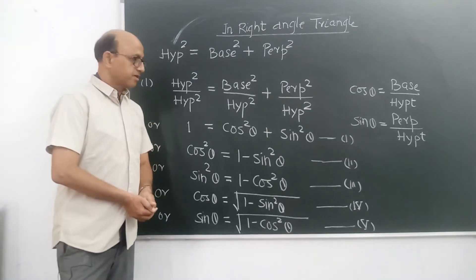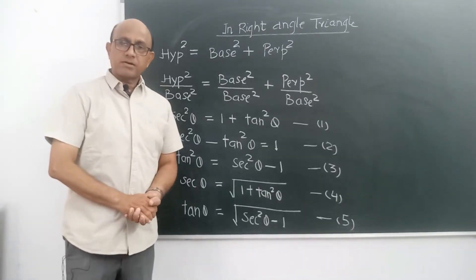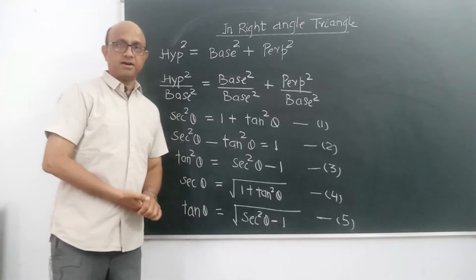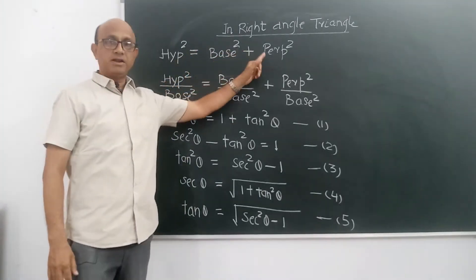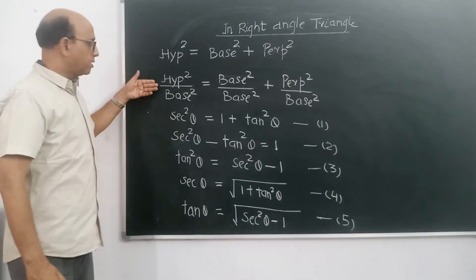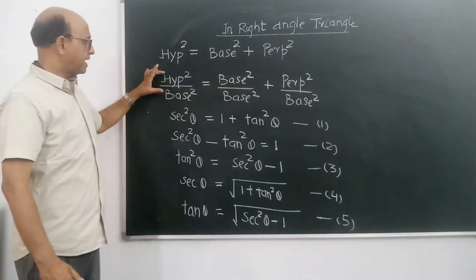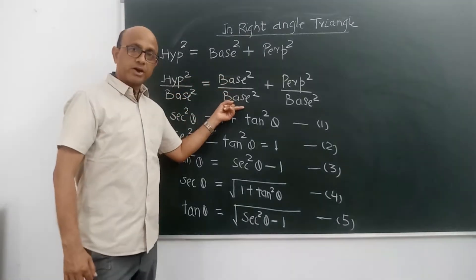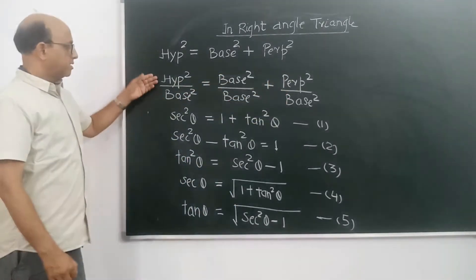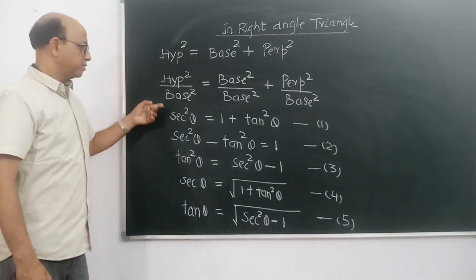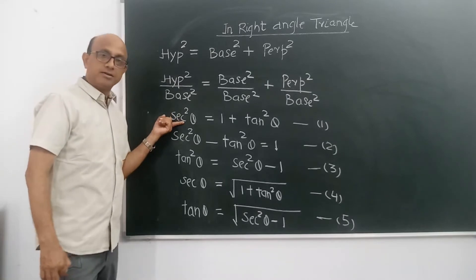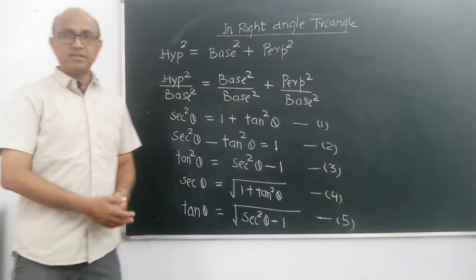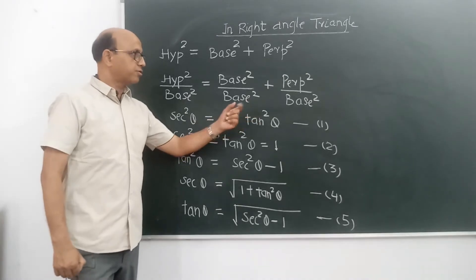Yeh pehle relationship ki 5 tarike hain jo sin theta aur cos theta ko bata rahe hain. Now we will understand the next relationship. As we know, hypotenuse square is equal to base square plus perpendicular square. Ab ki baar is equation ko hum base se divide kar lete hain. To hypotenuse square upon base square is equal to base square upon base square plus perpendicular square upon base square. Hypotenuse upon base sec hota hai, to sec square theta aa gaya.